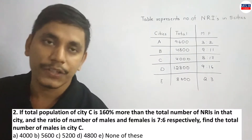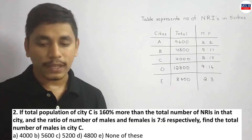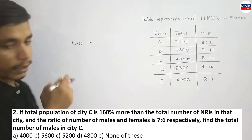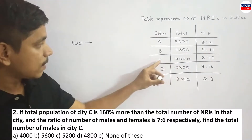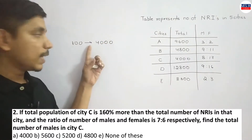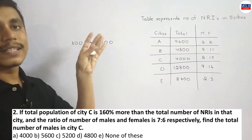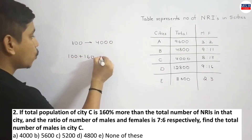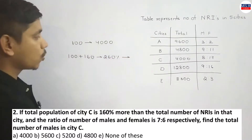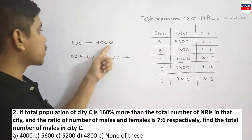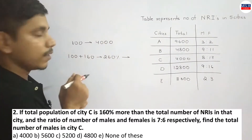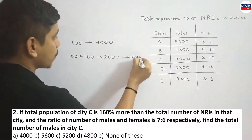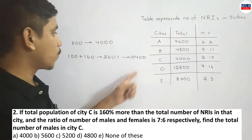160% more than means: the NRIs represent 100%, and the total population is 100 plus 160 = 260% of the NRIs. Total NRIs in city C represent 4000 numbers. So 100% is 4000, 1% is 40, and 260% is 26 times 4 = 10,400. Total population of city C is 10,400.